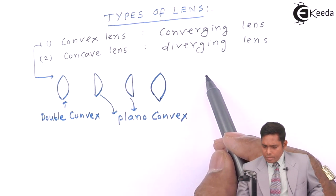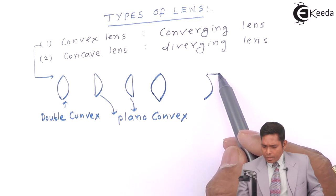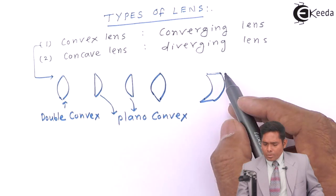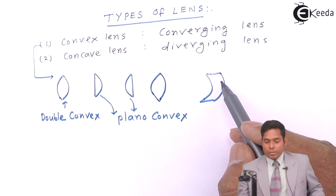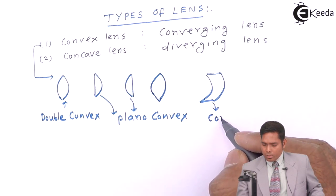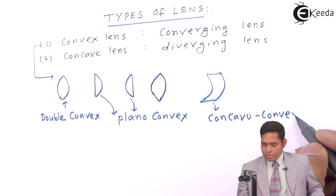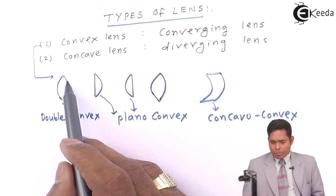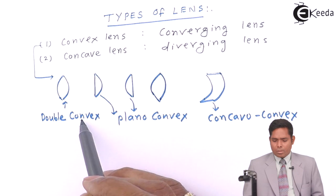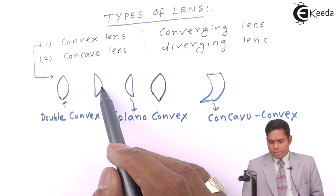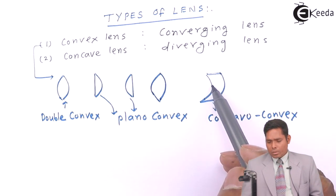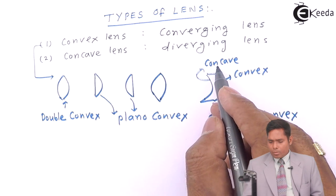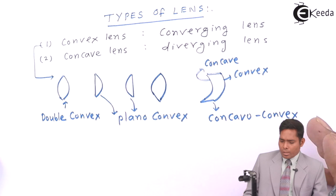There can also be a situation where one surface curves one way and the other curves the opposite way. This type of lens is called concavo-convex — meaning you have both types of surfaces. One side is like a convex surface and the other side is like a concave surface. So the name concavo-convex means one side is concave and the other side is convex.